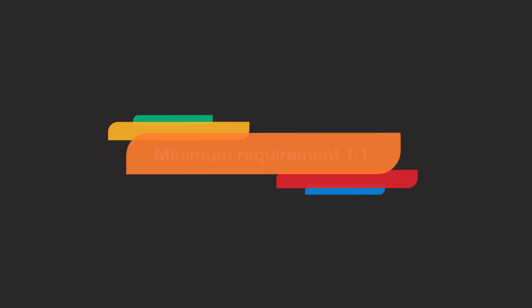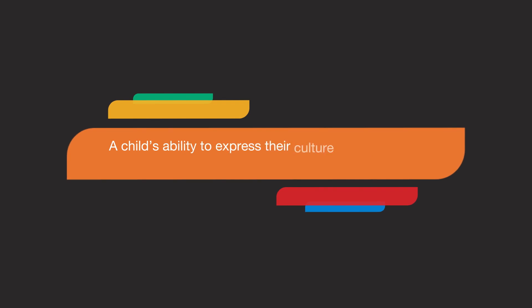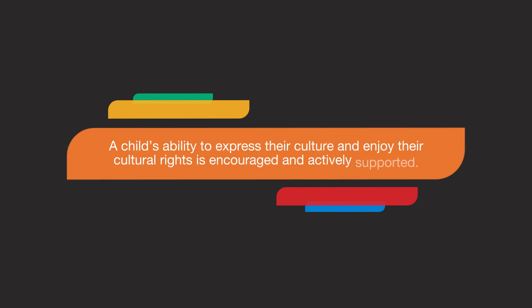Organisations need to commit long-term and take meaningful action each year to keep progressing their compliance with Standard 1. And remember, implementing this Child Safe Standard will not only help keep Aboriginal children and young people safe, it will expand your own understanding of Aboriginal culture, community and history. To comply with this standard, your organisation must meet the following five minimum requirements. Minimum requirement 1.1: a child's ability to express their culture and enjoy their cultural rights is encouraged and actively supported.